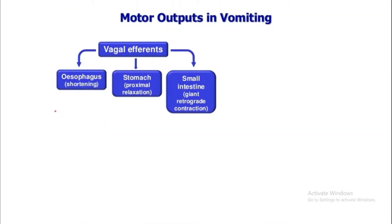Now we look at the actual events of vomiting. The vomiting center sends one efferent to the spinal motor neurons and another to the vagus nerve. The vagal efferents cause: shortening of the esophagus, proximal relaxation of the stomach, and giant retrograde contraction of the small intestine. Food present in the stomach and small intestine is refluxed back towards the mouth, made easier by the shortened esophagus.